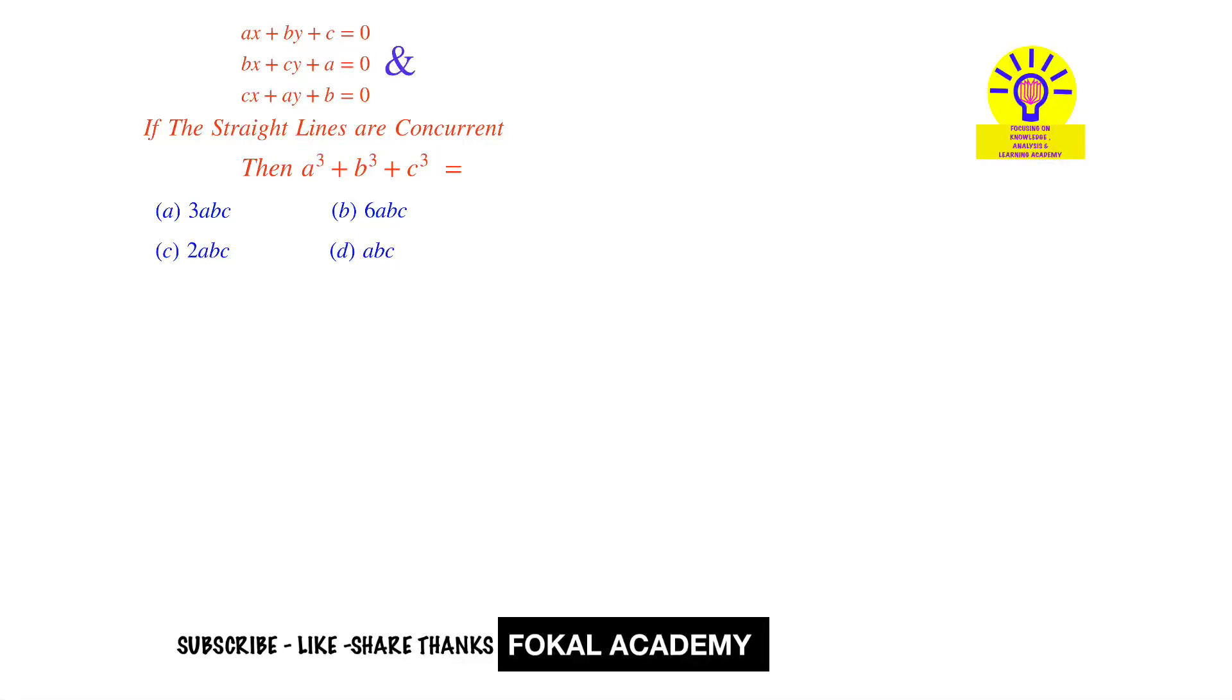This problem gives three line equations and says that these straight lines are concurrent to each other. So then what is the value of a³ + b³ + c³? This is line one, this is line two, and this is line three. If they are concurrent, then how can you find this value?